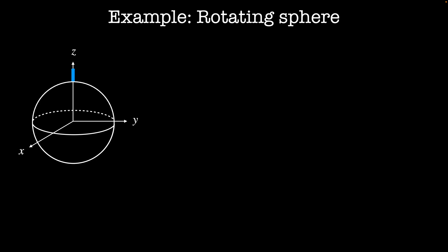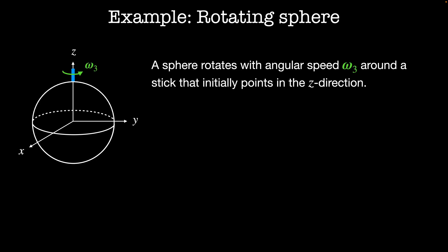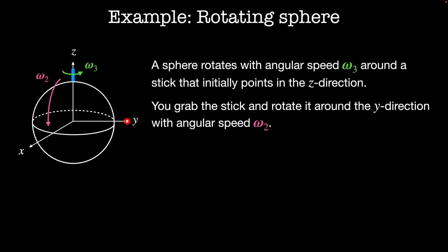For example, imagine we have a sphere that's initially rotating at angular speed omega 3 about a stick that's initially pointing in the z direction. You grab the stick and rotate it about the y direction at angular speed omega 2. Right after this kick, what is the angular velocity in the lab frame? The new angular velocity is omega 32 equals omega 3 plus omega 2.